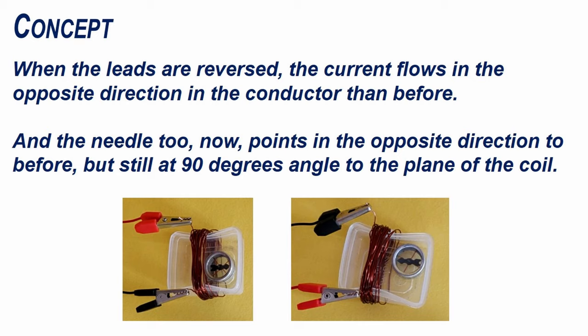When the leads are reversed, the current flows in the opposite direction in the conductor than before and the needle too now points in the opposite direction than before but still at 90 degrees angle to the plane of the coil.